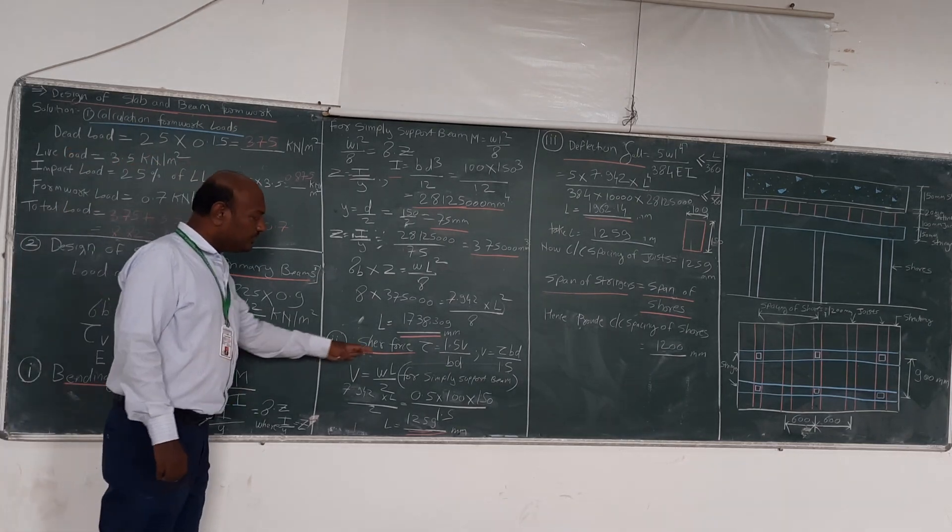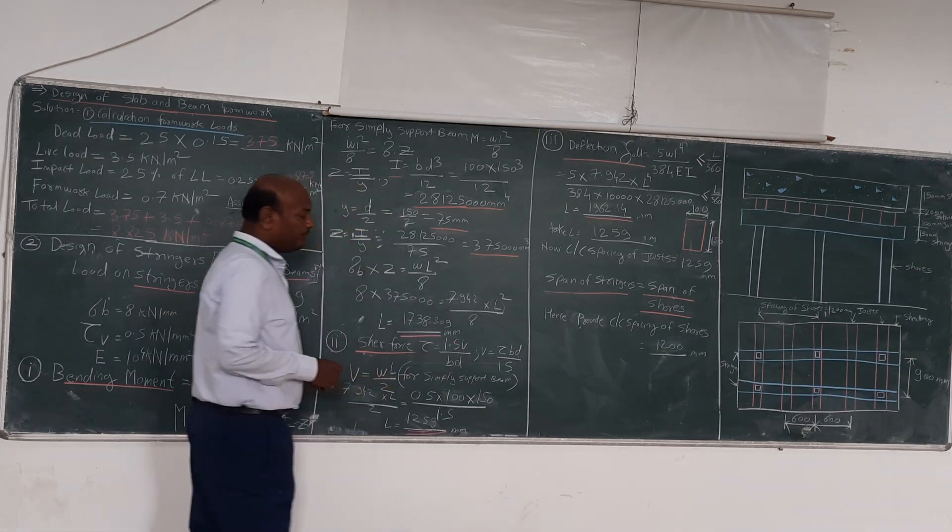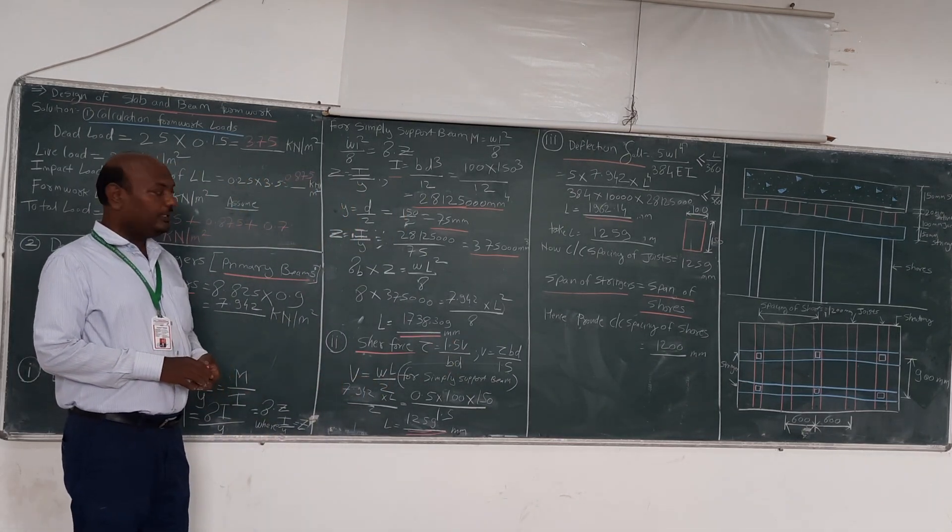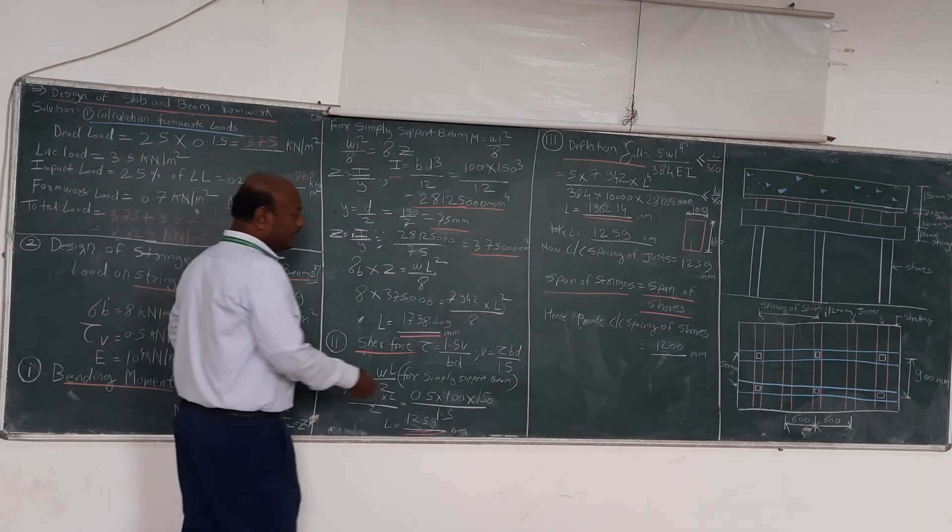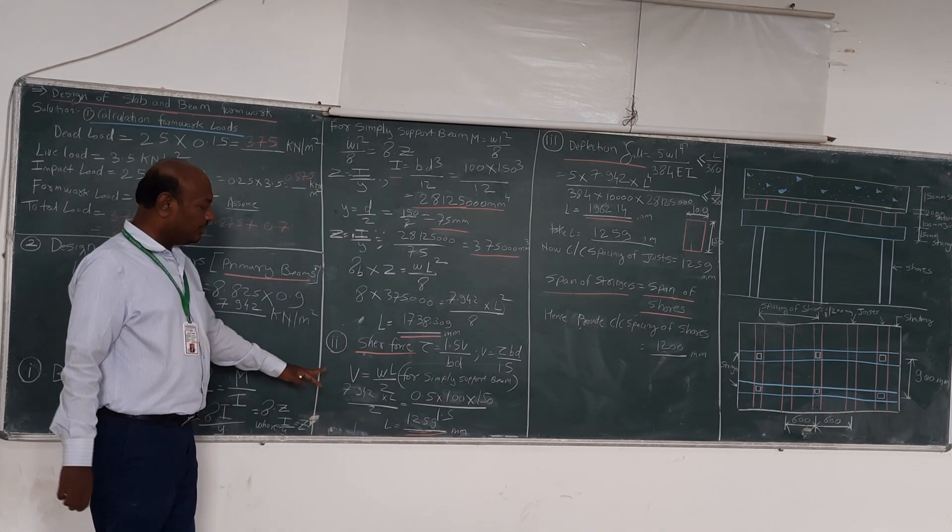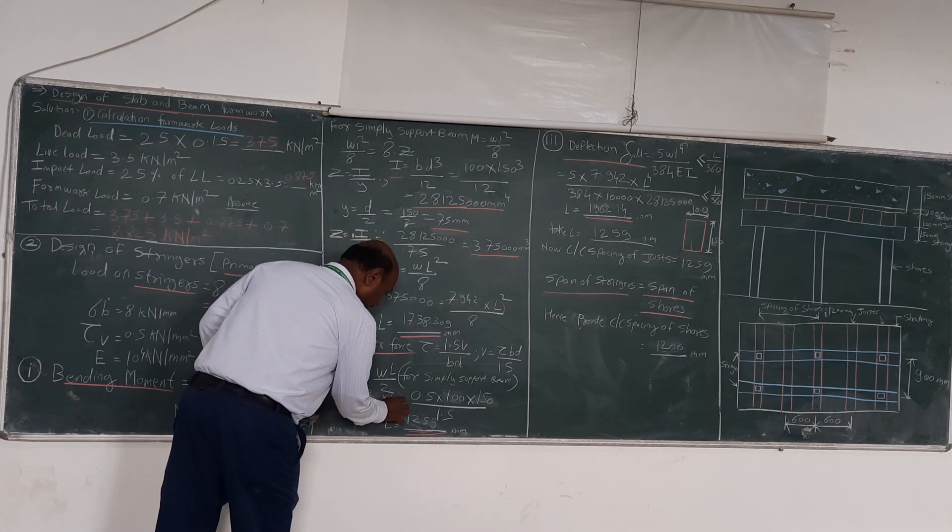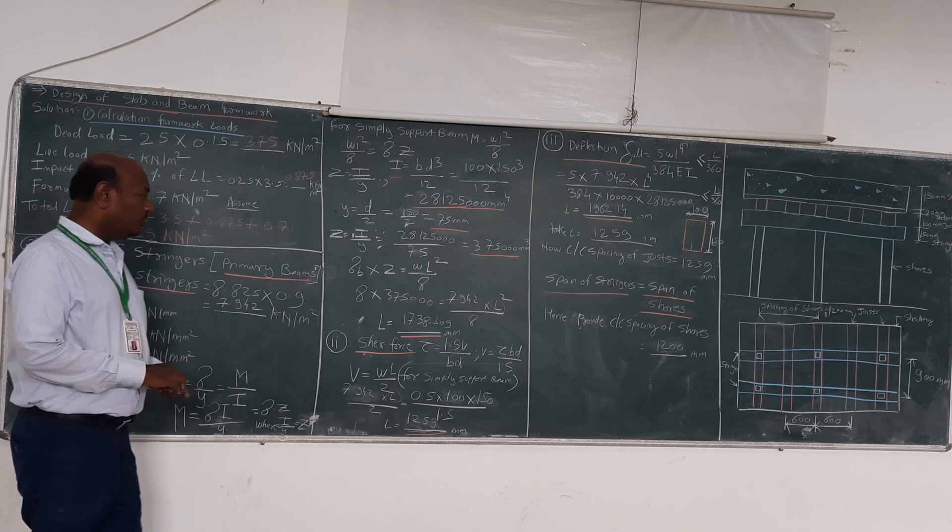Now second, we will use the shear force formula, that is tau equals 1.5V divided by bd. From this, the shear force V is equal to tau bd divided by 1.5. We will use this in this formula. The unknown here is again L.